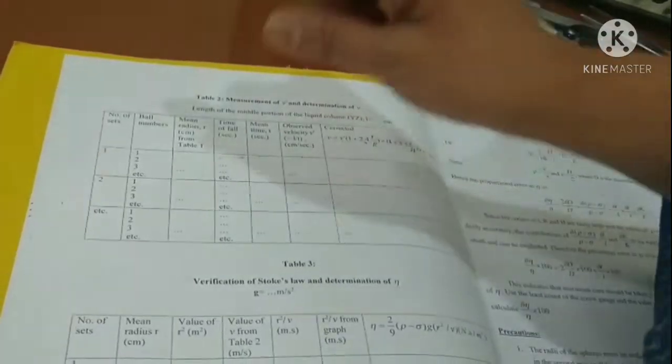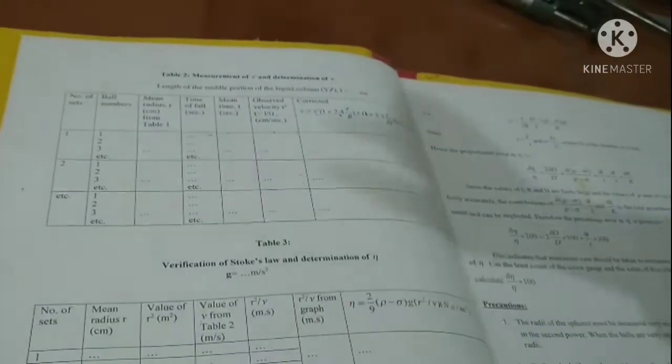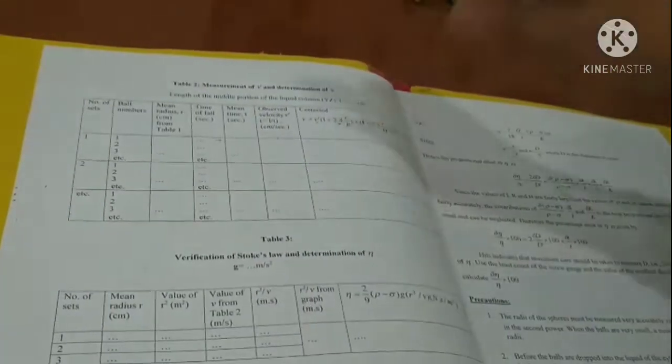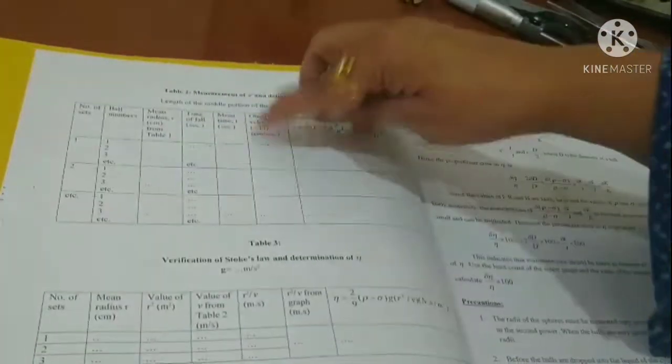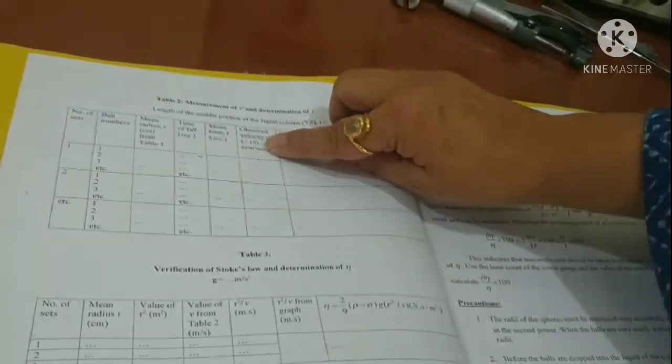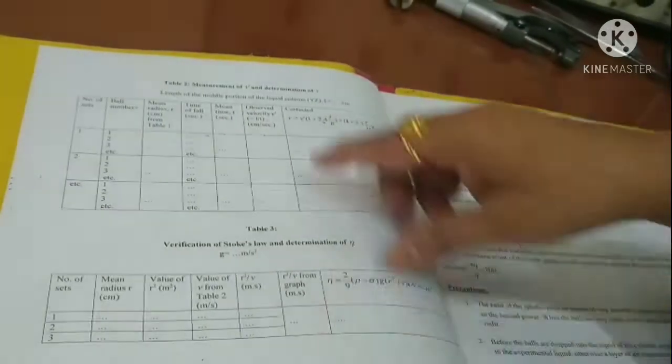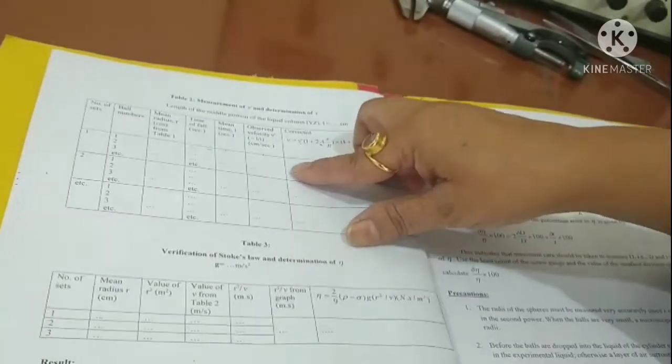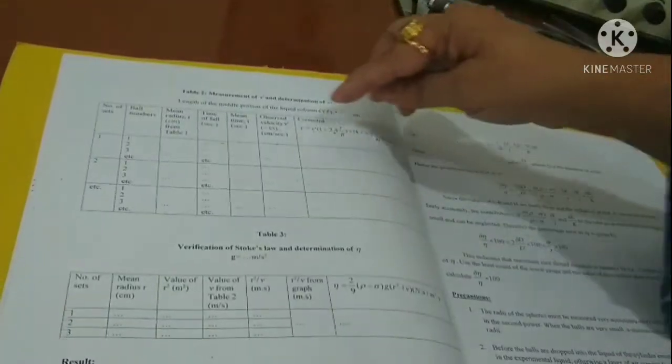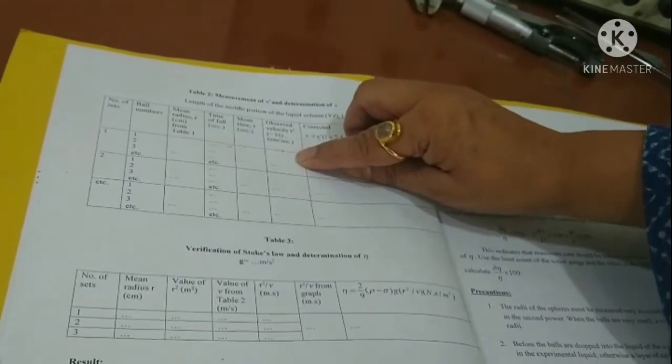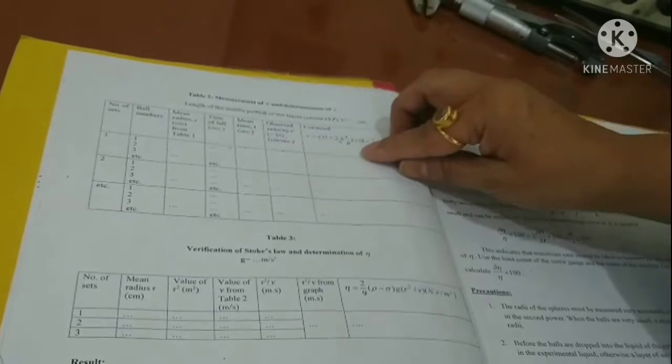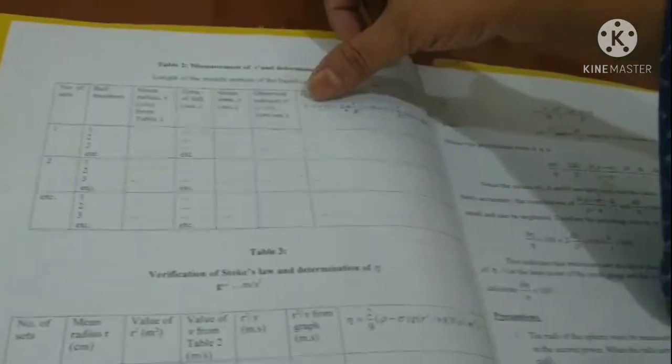You have to be careful that you take the average of one sized balls and the time also of one size balls. From these two values, we calculate the velocity because the length of the column is known to us, around 60 cm. This is our velocity which has to be corrected by Leidenberg's correction.